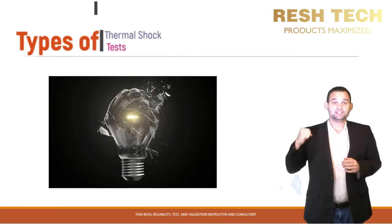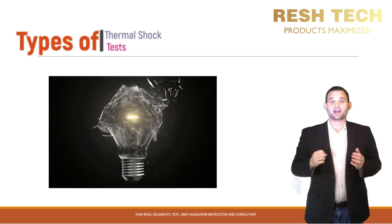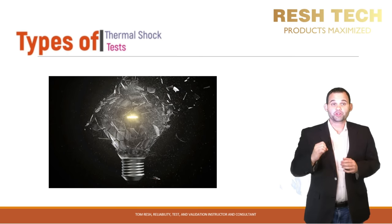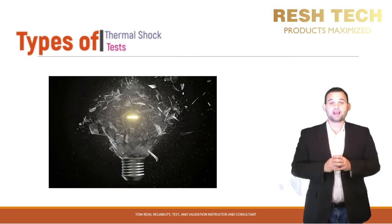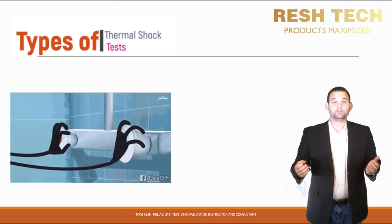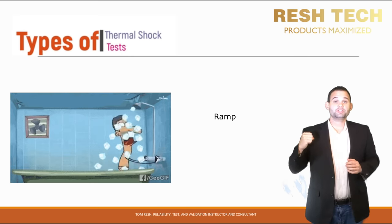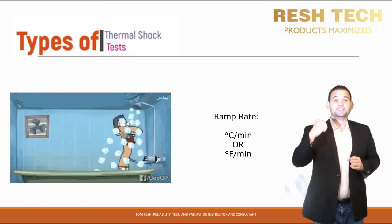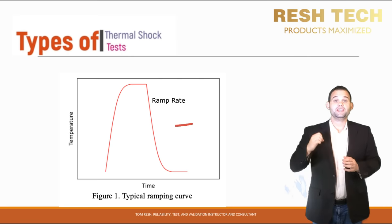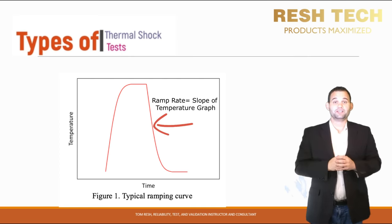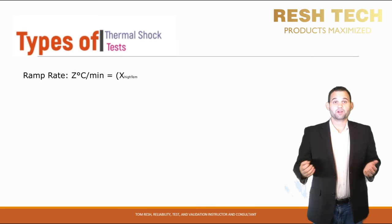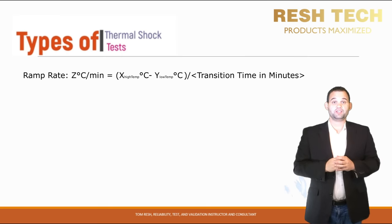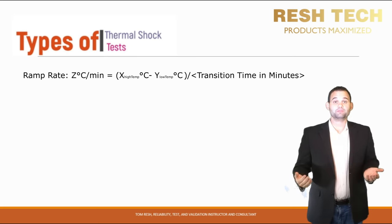This brings us to our next point: types of thermal shock tests. While thermal shock can be used to simulate real-life use cases and corner cases, thermal shock is often used to drive out defects in both the design and manufacturing process. By cycling hot and cold temperatures at a rapid ramp rate — called degrees Celsius per minute or degrees Fahrenheit per minute — you can accelerate temperature changes and drive out latent defects. Ramp rate is a simple calculation: take the delta of your temperature range and divide it by the amount of time it takes to transition between the temperatures.